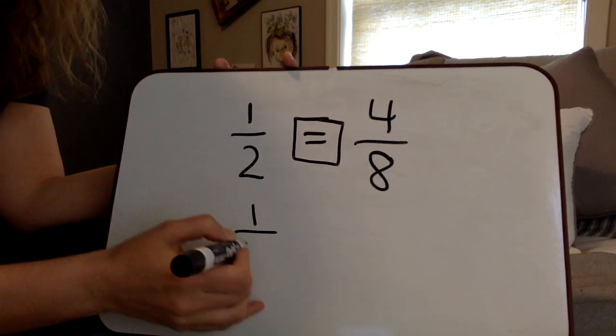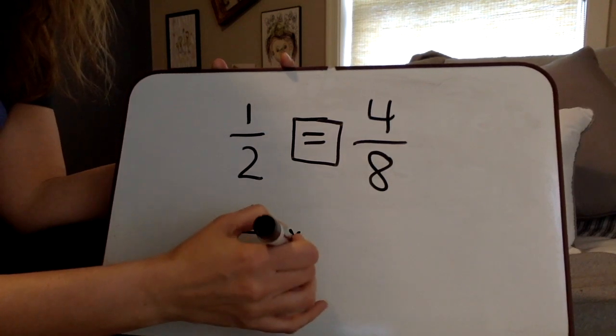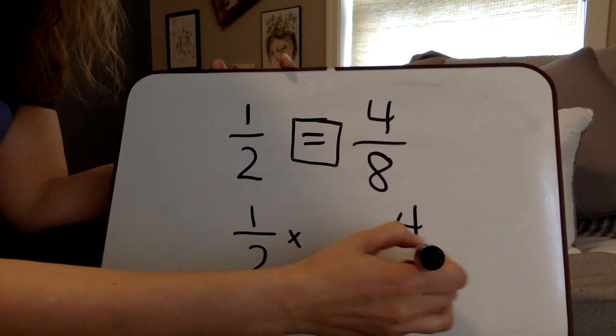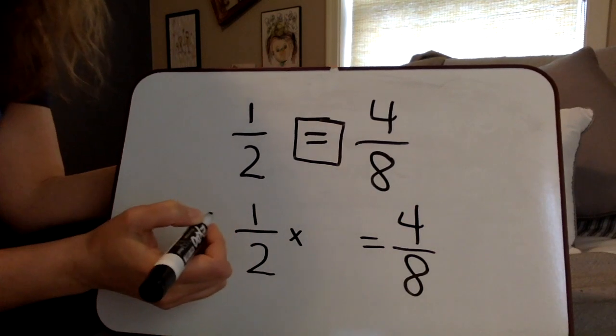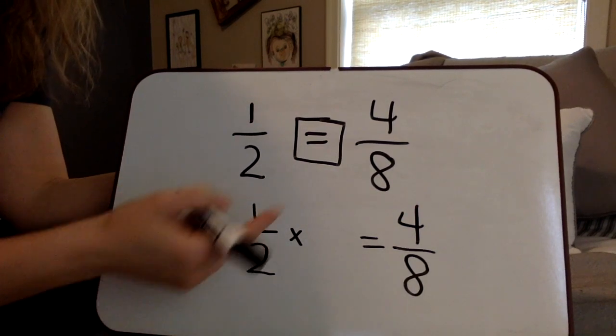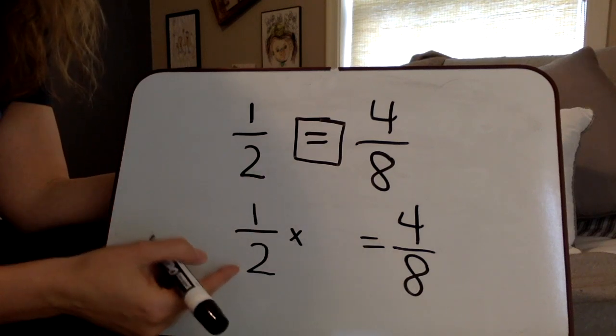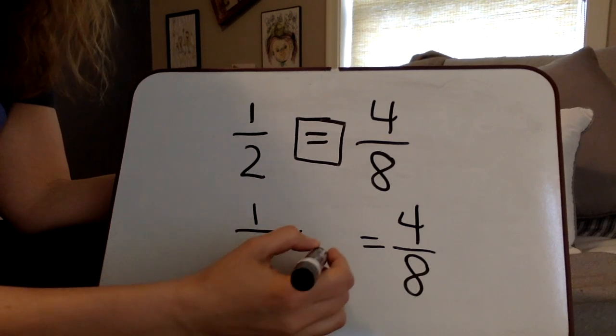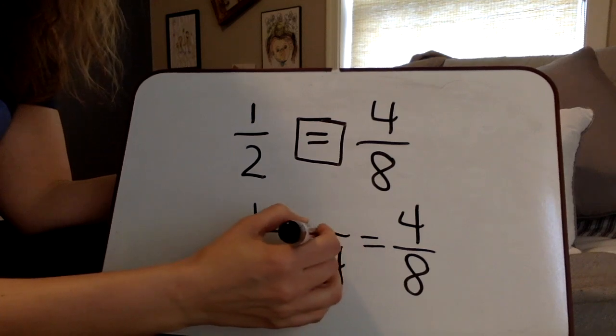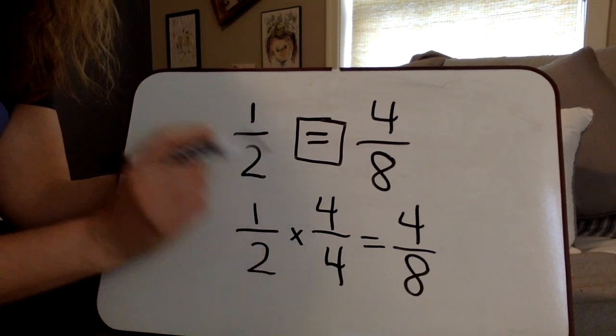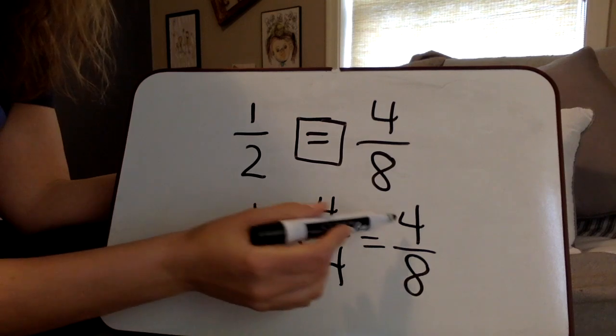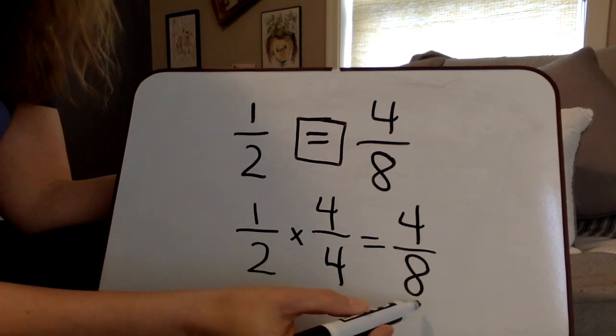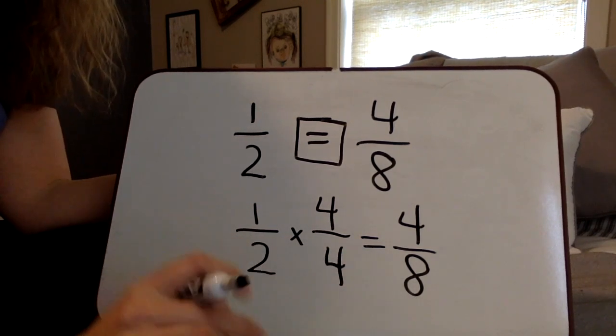I'm going to challenge you further to use our identity property in multiplication, which is multiplying anything by a value of 1, to figure out if these are in fact equivalent. So 2 times what is going to equal 8? 2 times 4. Whatever I do to the denominator I must also do to the numerator: 1 times 4 is 4. So I can show that 1/2 and 4/8 are in fact equivalent.